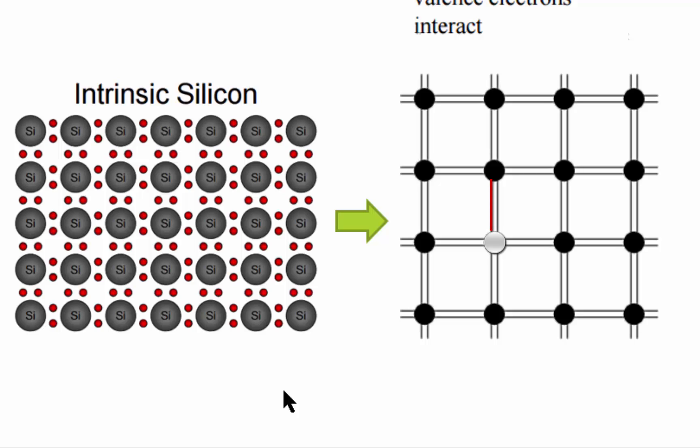Each line represents one shared valence electron. Since each atom both gives and accepts electrons with its four neighbors, there are eight lines on each atom.